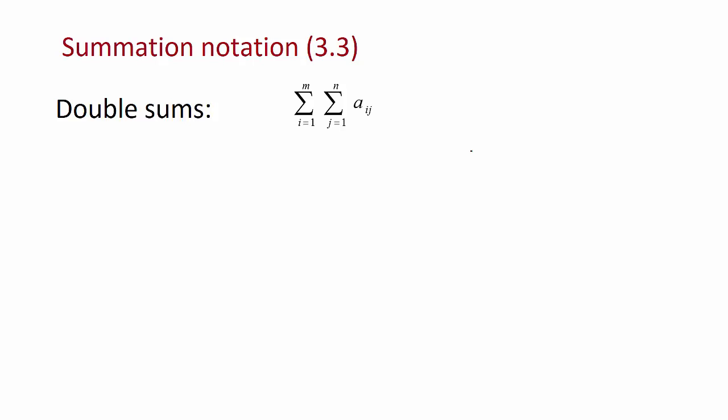We've looked at simple summations; now let's look at the case where we've got a double summation. Our summand has two subscripts, i and j, so we're summing from j equals 1 to n, and then i from 1 to m.